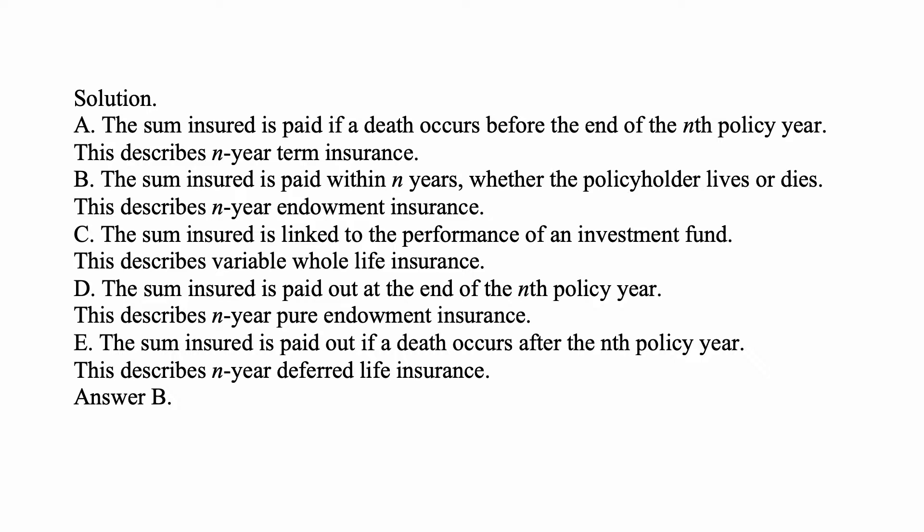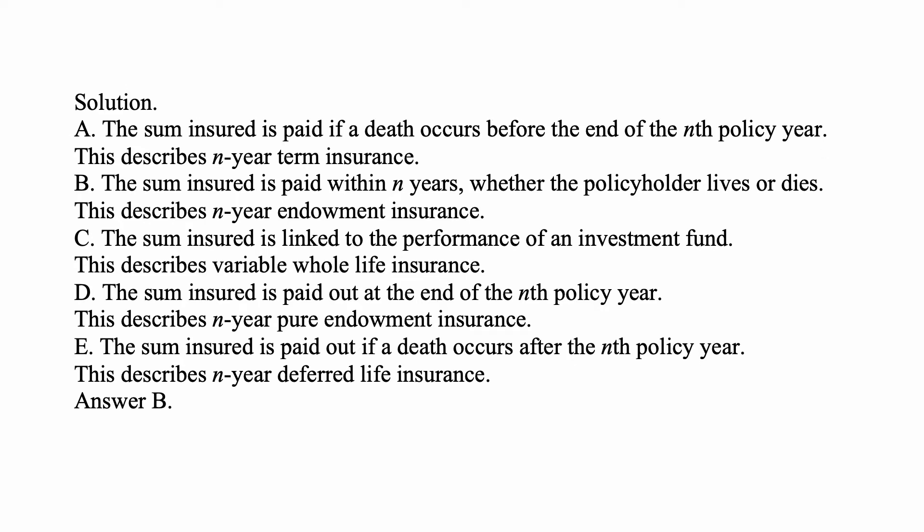Answer C: the sum insured is linked to the performance of an investment fund — this actually describes variable whole life insurance. Answer D: the sum insured is paid out at the end of the nth policy year — this describes n-year pure endowment insurance. Answer E: the sum insured is paid out if a death occurs after the nth policy year — this describes n-year deferred life insurance. Therefore, the answer choice is B.